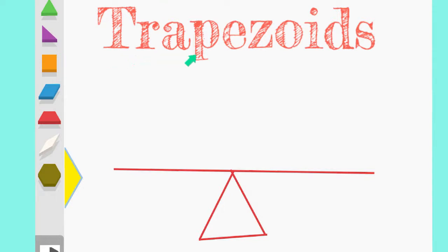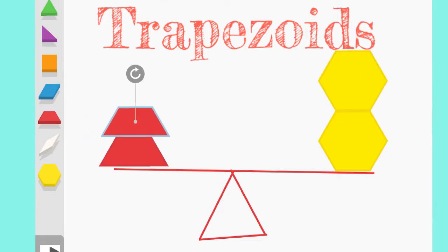We're going to be looking at how to balance trapezoids with our hexagons. Let's look at it. On one side of my scale I'm going to put two hexagons. Go ahead and put two hexagons on your scale now. Now I'm going to add on my other side of my scale two trapezoids.